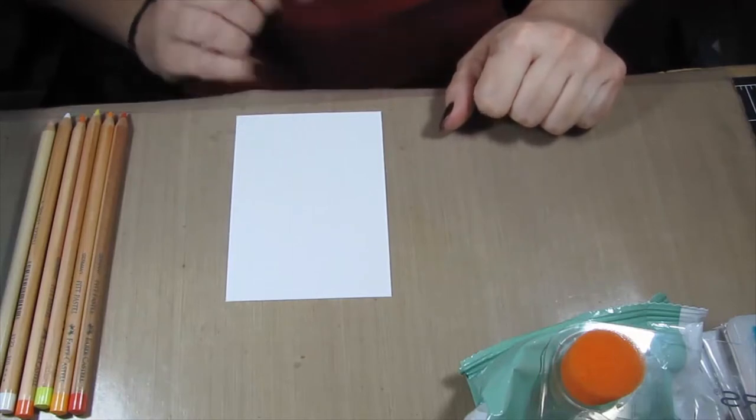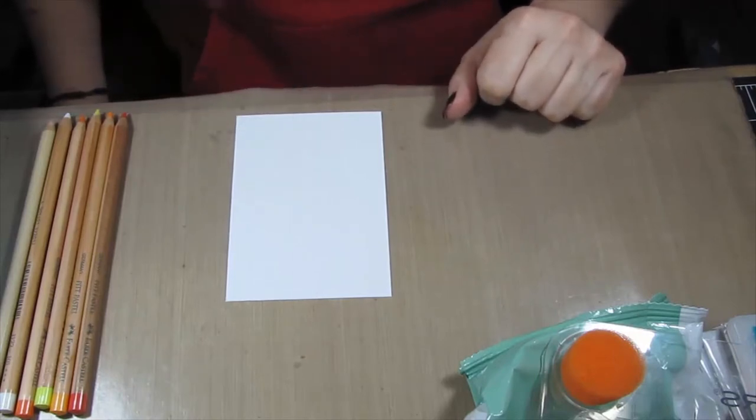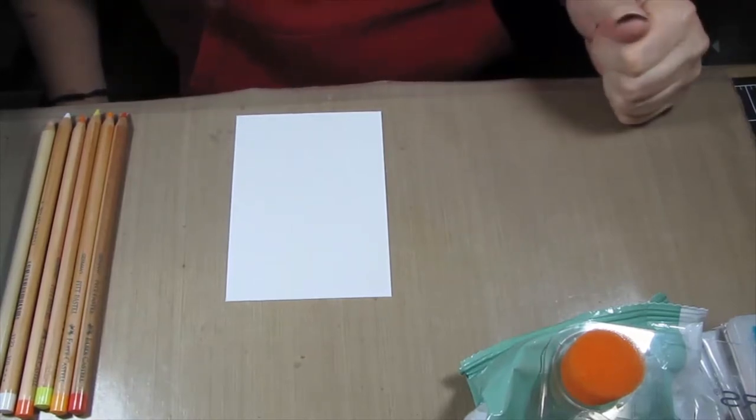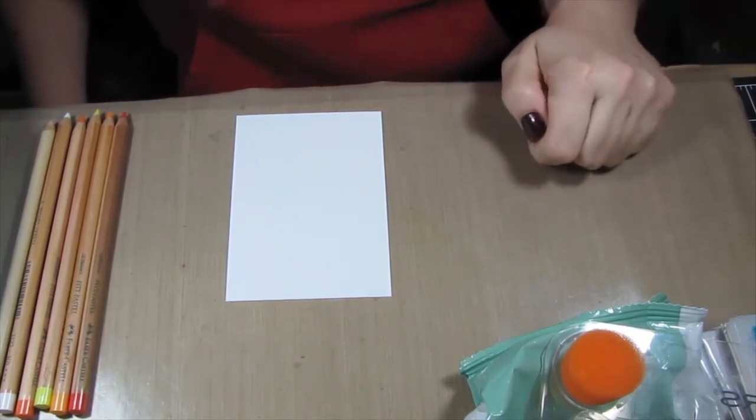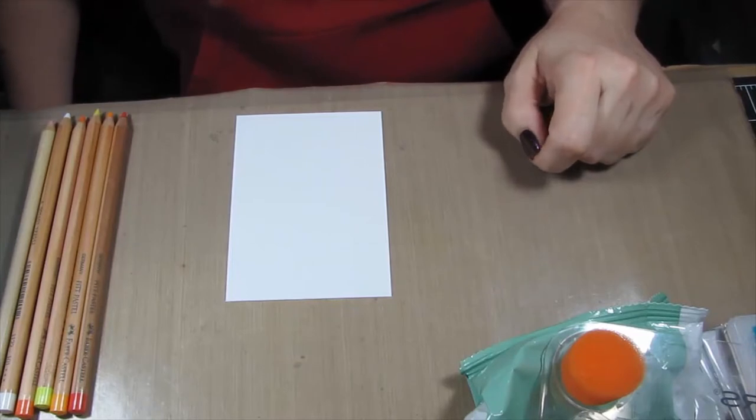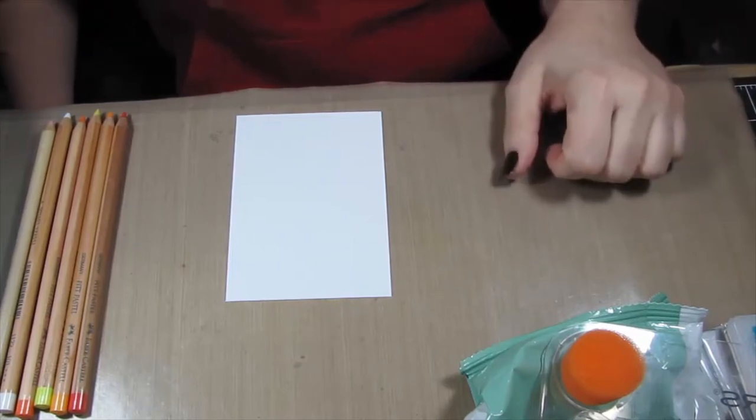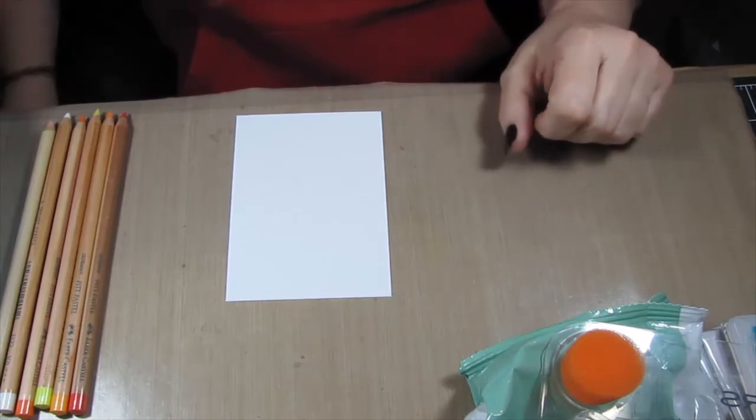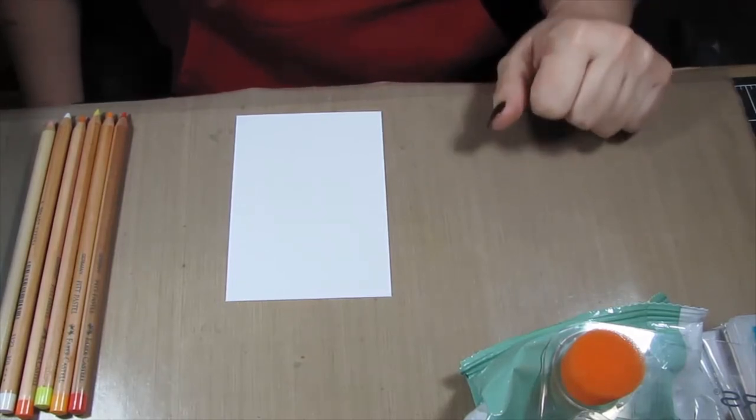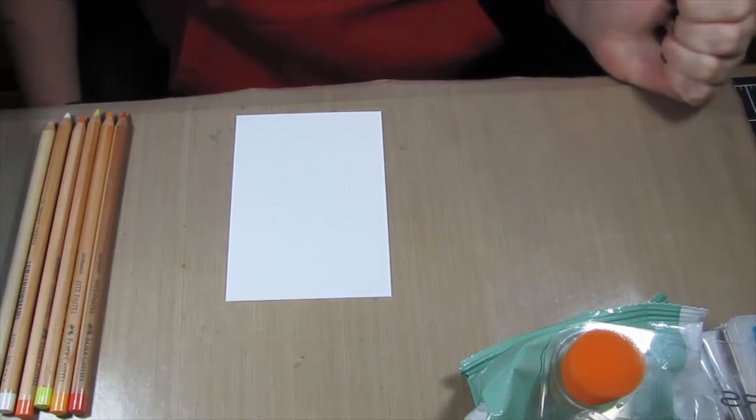The stamp set that I'm using is from Technique Tuesday. It's called Poppy Sentiments and I'm using this because it's just a couple days before Veterans Day and I'm a veteran, so it's a special stamp set to me. It's also designed by my friend Terry Anderson and I just think it's a great stamp set. So here we go, let's get started.